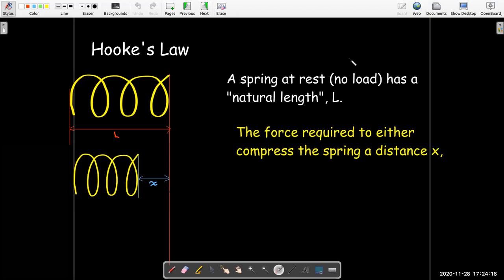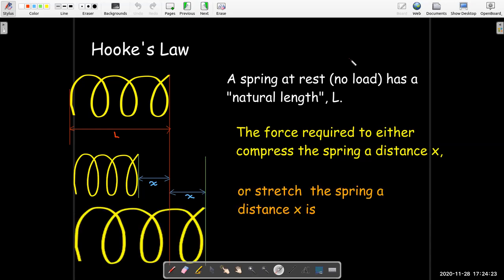Now, in order to compress the spring, you're going to have to put some force on it, or you may want to stretch the spring, in which case you still need to put some force on it. And if we stretch it a distance x or compress it a distance x, the force needed is proportional to that distance x. So F equals kx, where k is a constant, and it's called the spring constant.